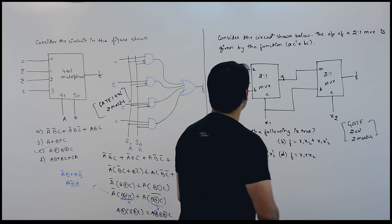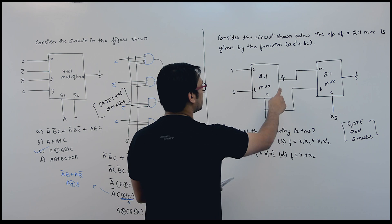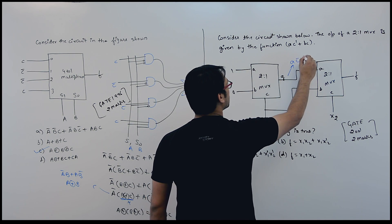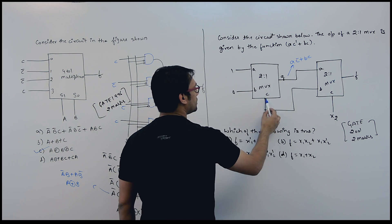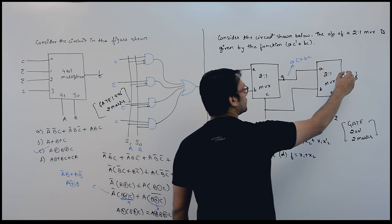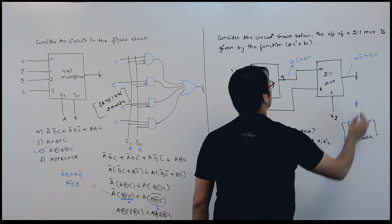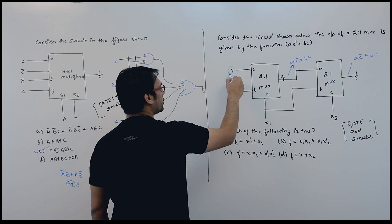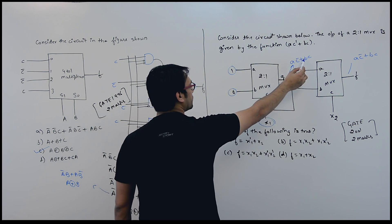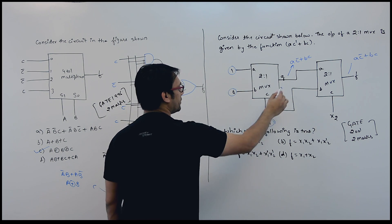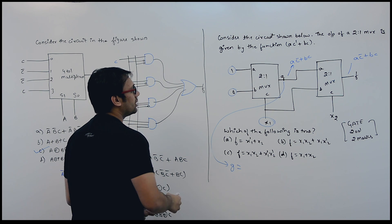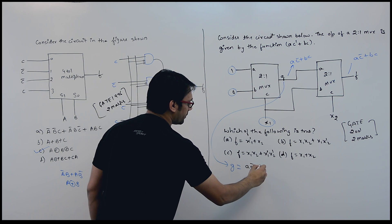It is not representing function A directly. The output of this multiplexer G can be represented as A C complement plus B C, where this is A, this is C complement, this is B, and this is B C. They have already given you the values of A and B, and also the value of C. You can just substitute these values into the equation to get the output. For function G, it equals A C complement plus B C.